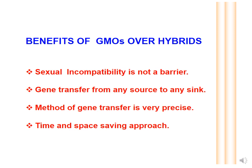The last benefit of GMOs is that their development takes less time and space compared to hybrids. GMOs can be developed in as little as one year and then released into the field from the lab, while developing hybrids requires acres of land and takes approximately a decade. These are the four major advantages of GMOs over hybrids.